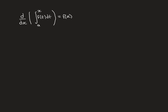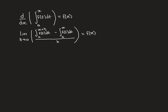Let's begin with the first fundamental theorem of calculus. We want to prove that the derivative of the integral from a to x of f(t) dt gives back the original function evaluated at x. Our first step is to replace the derivative with what it actually is: the limit as h approaches 0 of the difference quotient — the function evaluated at x plus h, minus the function evaluated at x, divided by h.